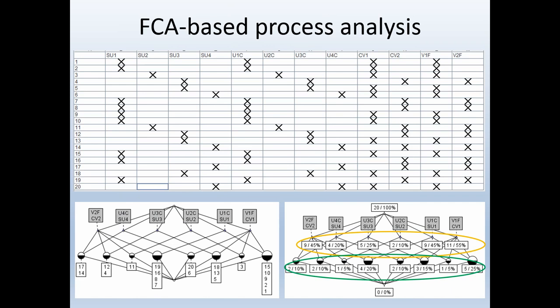This same information can be represented as a concept lattice, or a line diagram, which you can see in the left bottom of this slide. The information in the table can be obtained from this lattice in the following manner. For example, take the concept in the left bottom corner with objects 14 and 17. We can follow the lines upwards, and we can find the transitions V2F, CV2, U4C and SU4.